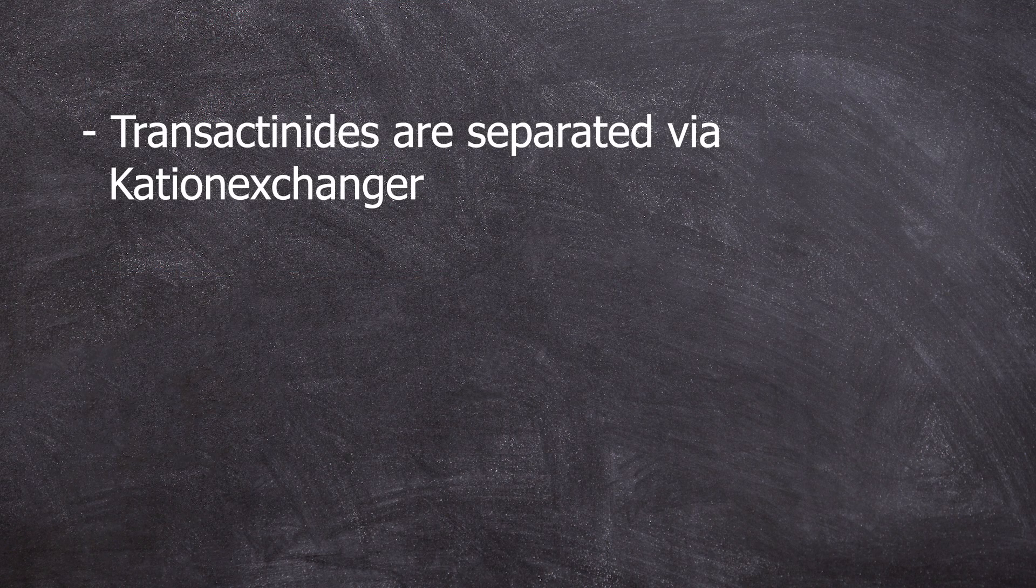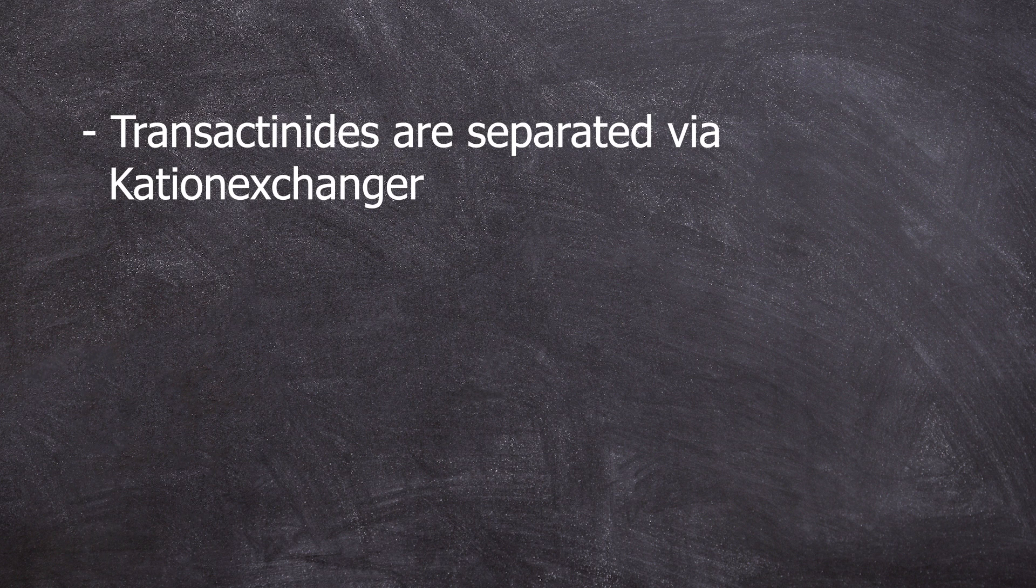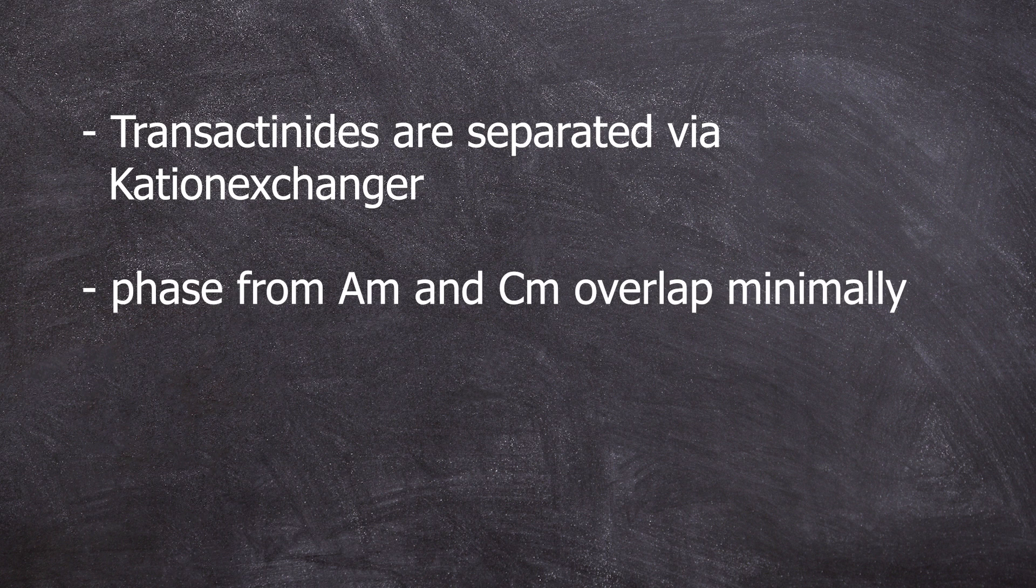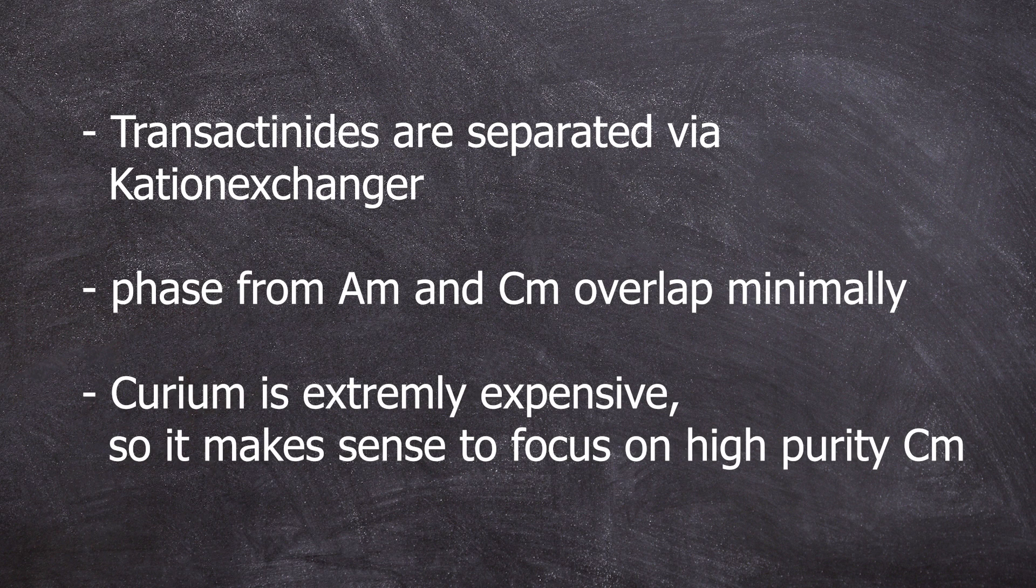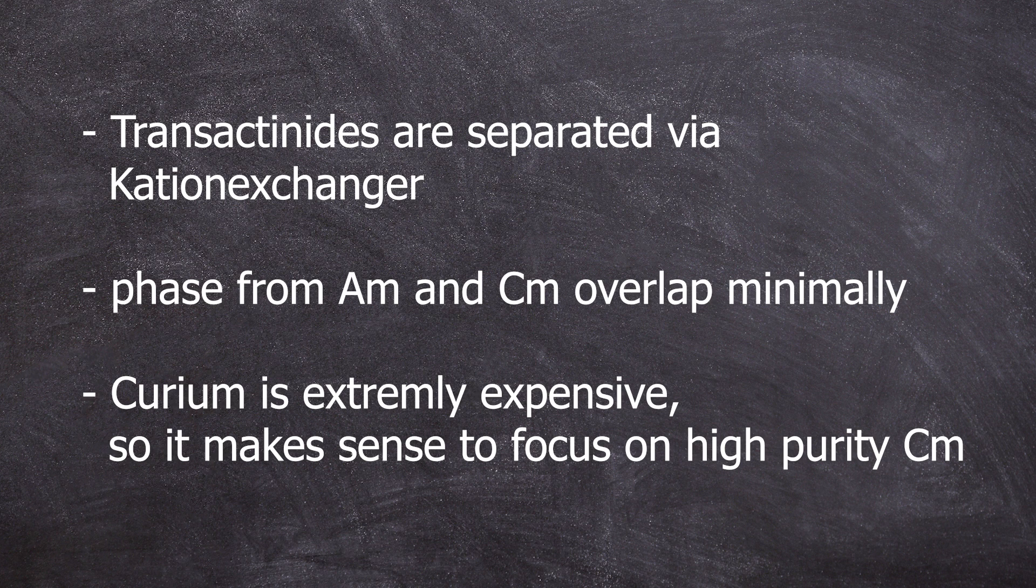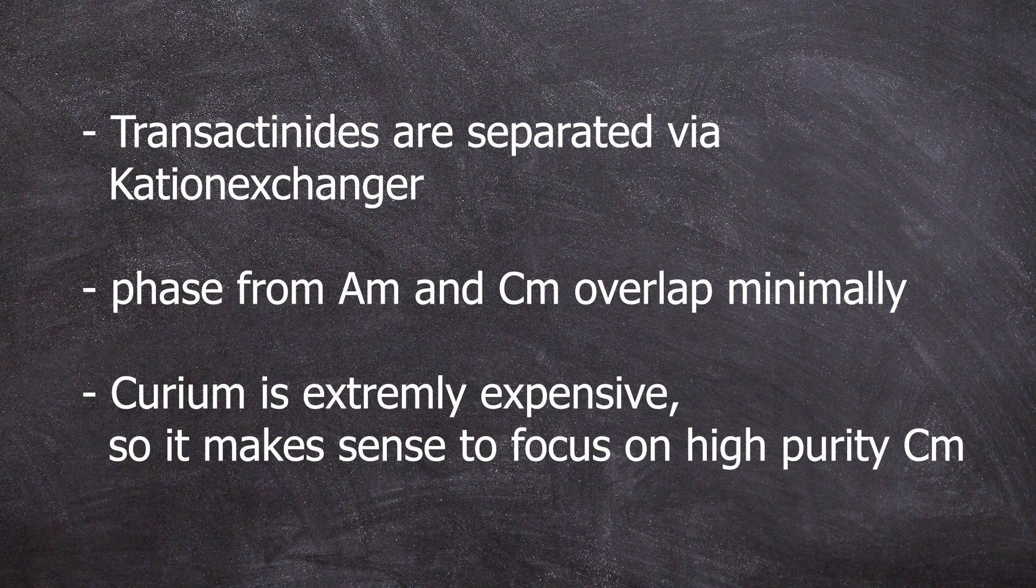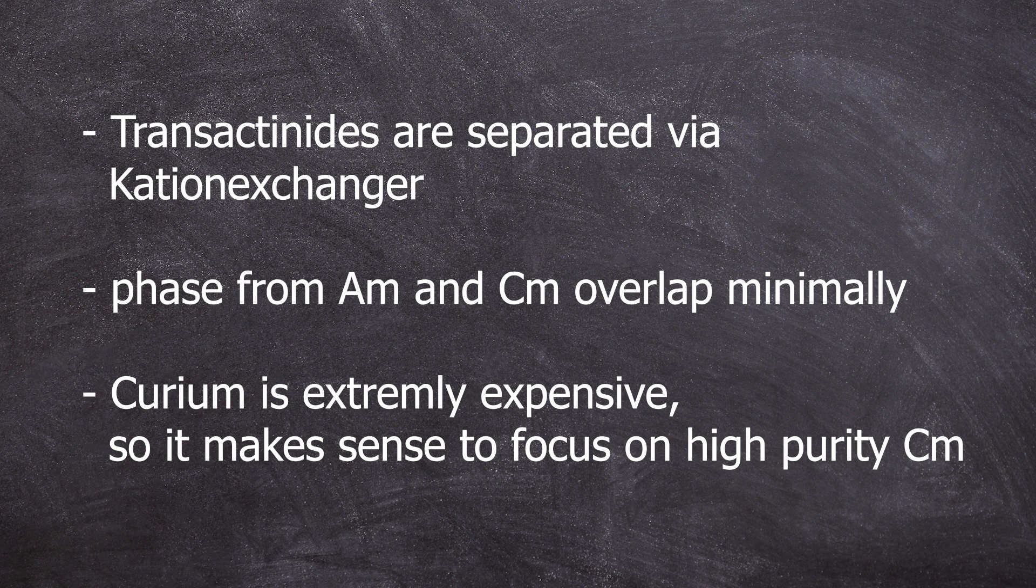A few closing words. As already mentioned, curium is quite difficult to separate from americium. Industrially, they are separated using cation exchangers. You can still separate the individual elements quite well from each other, but since curium is so much more expensive than americium, I can well imagine that only minimal traces of curium are left in americium and the focus lies on having highly pure curium rather than the other way around.